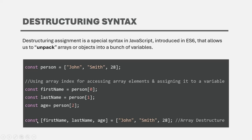Here, we use the const keyword to create variables — you can also use let if you plan to modify them later. Within square brackets, we specify the variable names: firstName, lastName, and age. We then assign an array to that. The first element gets assigned to firstName, the second to lastName, and the value 28 gets assigned to age. This is called array destructuring syntax.